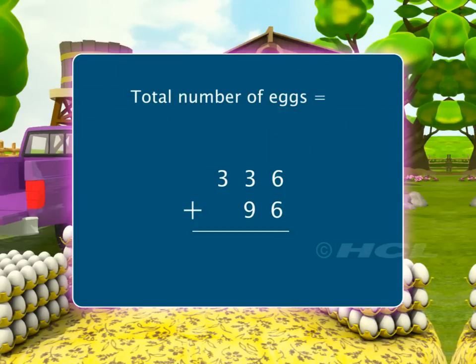We always start adding from the digit in the ones column. Thus, adding 6 and 6 in the ones column, we get 12.